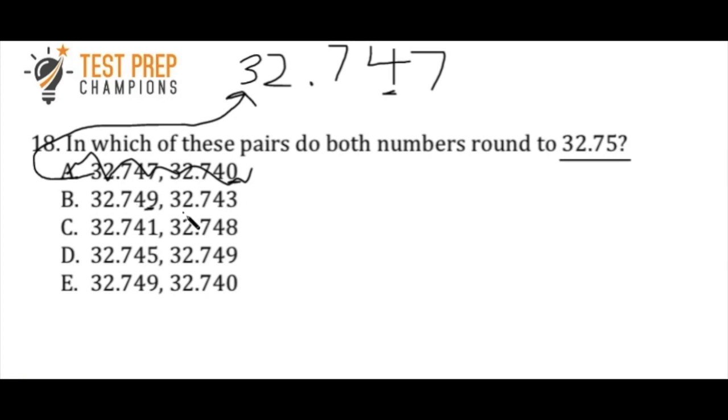Now let's look at the second number. So 32.743. So again, the 4 is our number in the hundredths place. Simply look directly to the right of it. Is that number a 5 or greater? Well, no, it's not. It's less than 5. Therefore, 32.743 is not going to round up to 32.75. So B is also out.